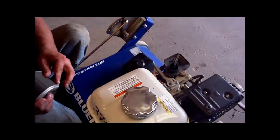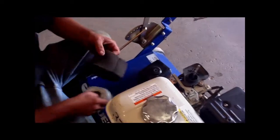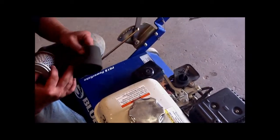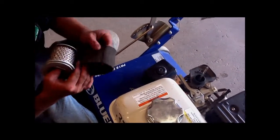Alright. Next, we're going to check the outer ring. Make sure we don't have any tears or cuts in it. If there's any tears or cuts, it needs to be replaced.